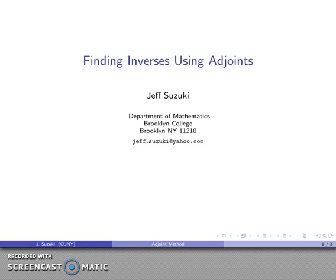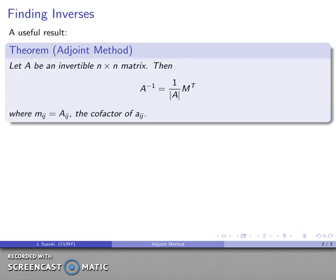One important use of the cofactors of a matrix is that we can find the determinant of a matrix fairly quickly, provided we have a good fast way of finding the determinants of a cofactor. This shows up in the following theorem, which is the adjoint method. If I want to find the inverse of an invertible matrix A, then that inverse can be found as follows.